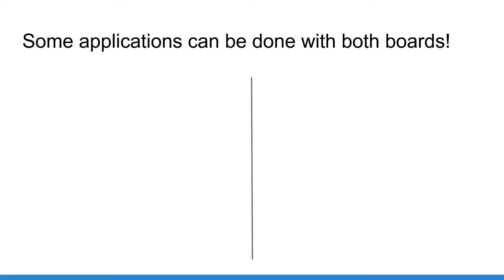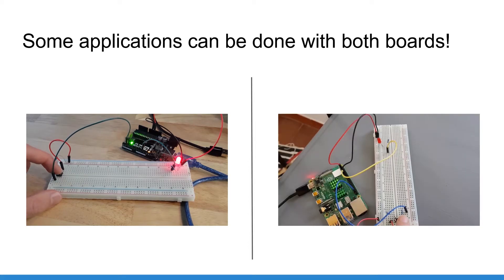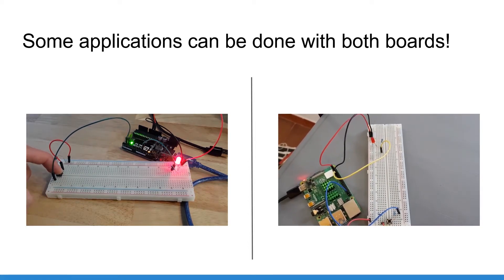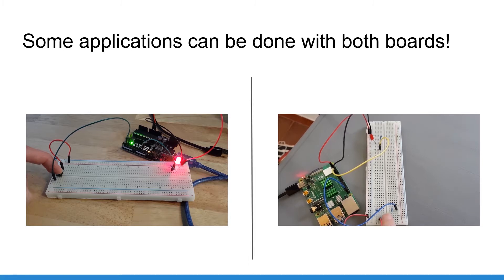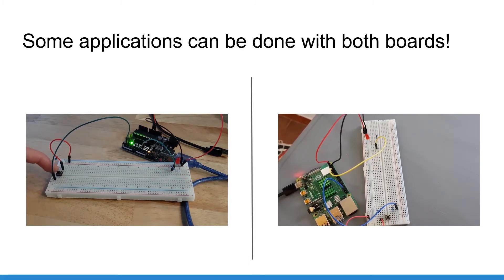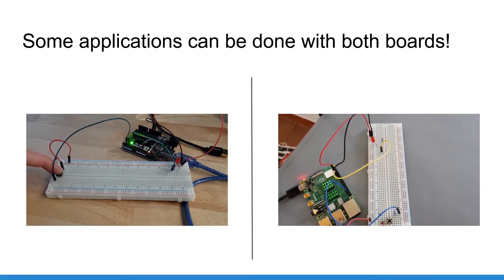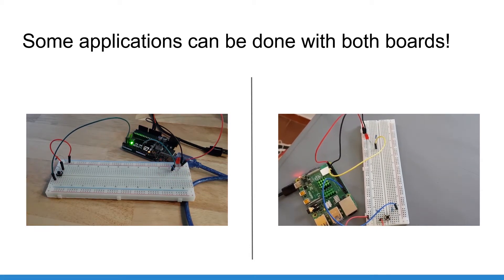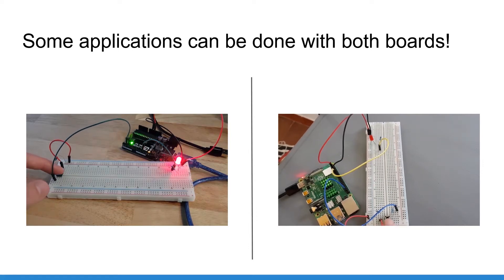You might say that there are some applications that you can do with either an Arduino or a Raspberry Pi. For example, if you try to control an LED with a push button, this can be done with both boards with the same result. For those kinds of overlapping applications there is no right or wrong solution.